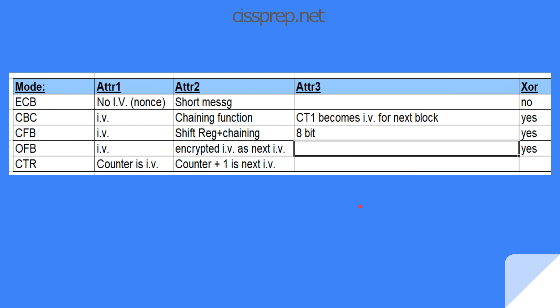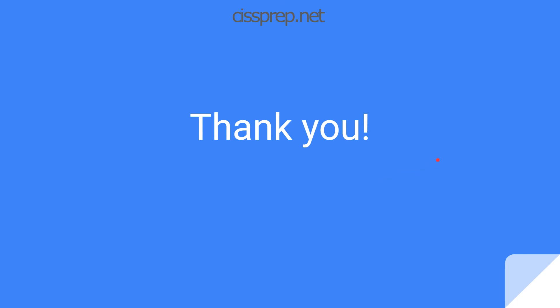Here's a table that summarizes the differences between all these modes: electronic codebook, cipher block chaining, cipher feedback, output feedback, and counter mode. Unfortunately there's no great way to memorize this, so you may want to pause the video and copy this table down into your memorization sheet. Anything in the common body of knowledge is testable, so if you feel the need to write this down, I definitely encourage you to do so. I hope this video has helped you understand the difference between the modes and increased your understanding of the encryption process overall. Feel free to leave a comment below — thanks and have a great day.